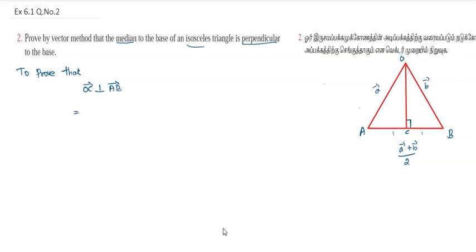We calculate OC vector, which equals A vector plus B vector divided by 2. Then AB vector is calculated as OB vector minus OA vector, which equals B vector minus A vector.